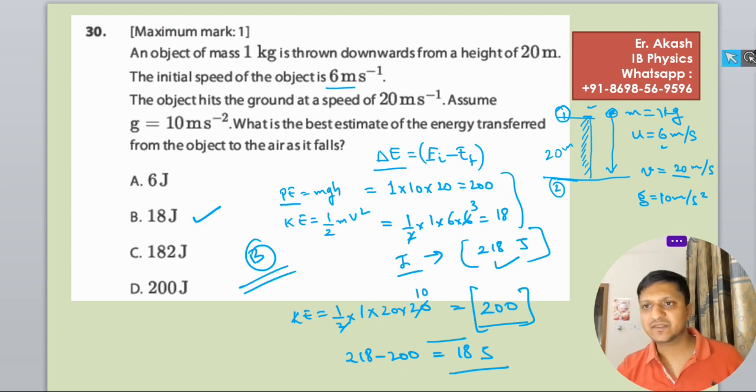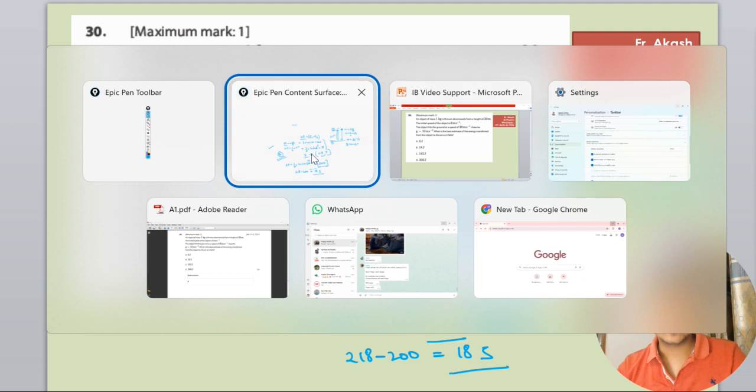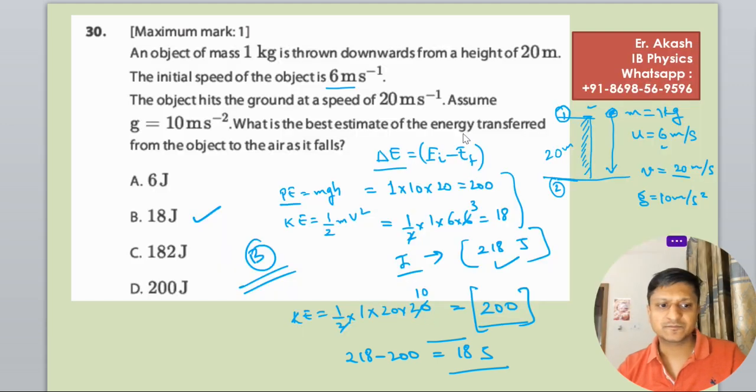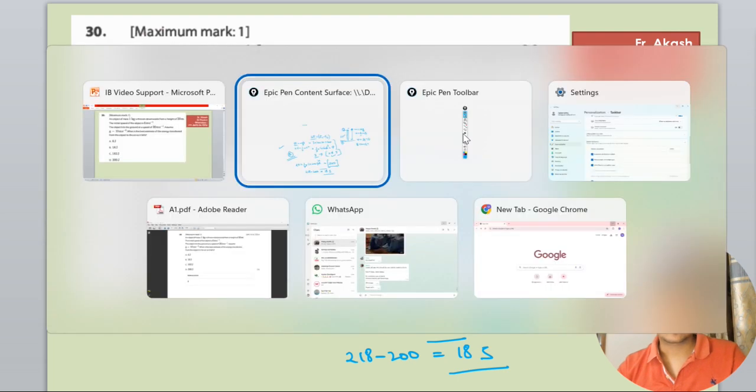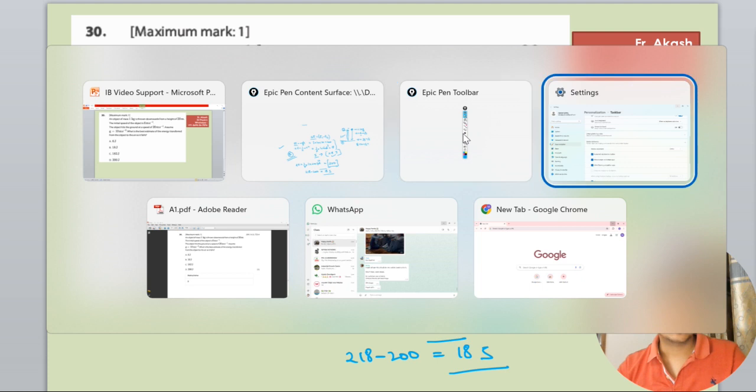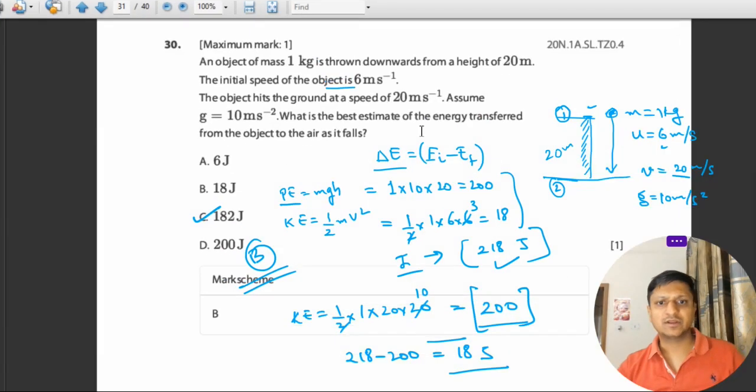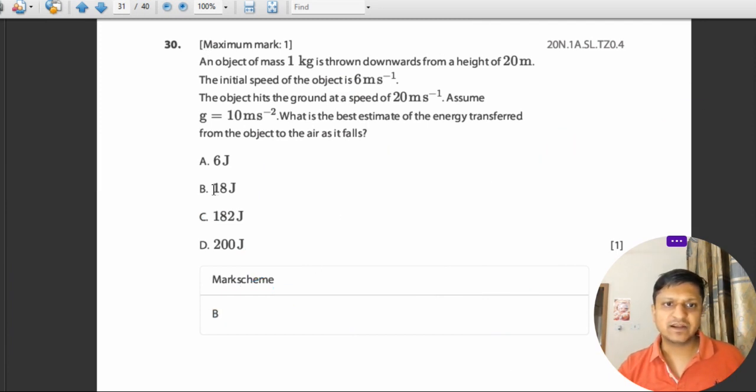Now we will check the mark scheme. Mark scheme we have in the discussion. Where is the mark scheme? This is the B option. This is the question and 18 joules is the right answer.